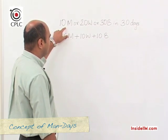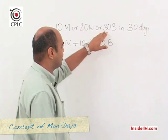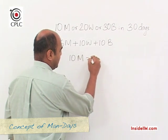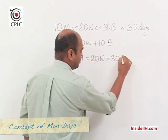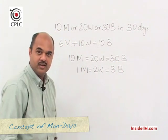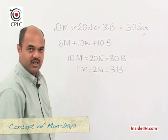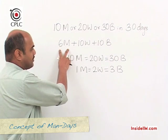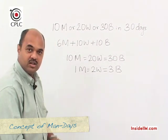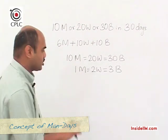We know that 10 men, 20 women, and 30 boys can each complete the work in 30 days. This means 10 men = 20 women = 30 boys, and therefore 1 man = 2 women = 3 boys. We'll use this relationship to convert the question — 6 men + 10 women + 10 boys — entirely into one single parameter: boys.